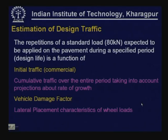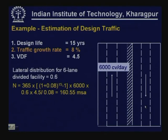Estimating design traffic requires initial traffic data, vehicle damage factor, and lateral placement characteristics. For example, with a 15-year design life, 8% traffic growth rate, VDF = 4.5, and a 6-lane divided facility with a lane distribution factor of 0.6, the total equivalent standard axle load repetitions work out to 160.55 million ESALs (using VDF = 4.5).